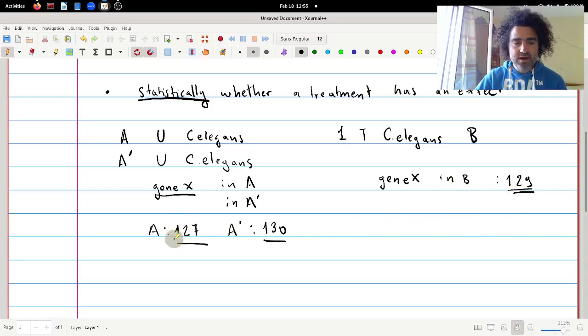Now again this is higher than A. So somebody could say that treatment affects the expression level of gene X. But if we take into account also A prime, then we will say we have animals here that are untreated and the expression value is 127 and 130, and we have treated animals that this expression level is 129.